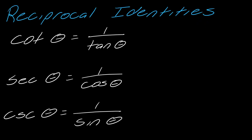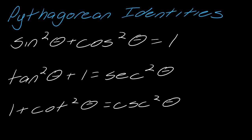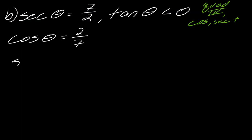I can quickly figure out cosine of theta using the reciprocal identity. Secant of theta and cosine of theta are reciprocals of one another, so cosine of theta is 2 over 7, no problem. I like staying consistent, so I'll use the Pythagorean identity: sine squared theta plus cosine squared theta equals 1.